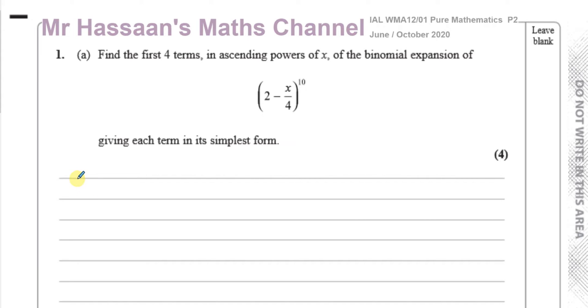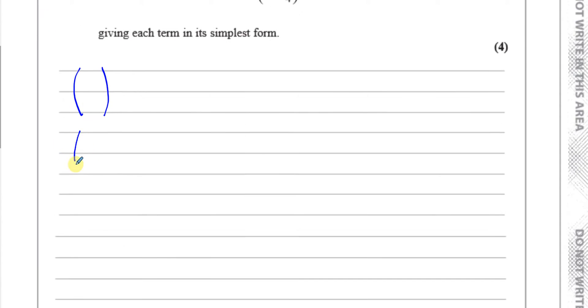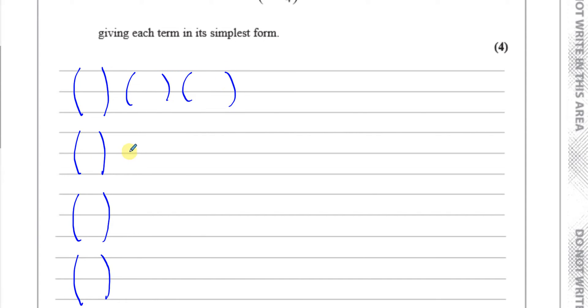Basically what you do is write your bracket out. I like to write one row for each term, so I'm going to put four different rows here, and each row I'm going to put three brackets like this — you'll see what I'm doing in a minute. This just makes everything very clear.